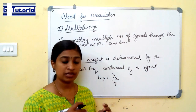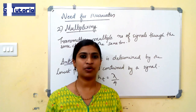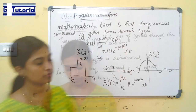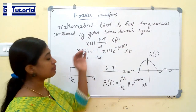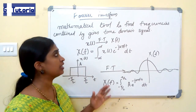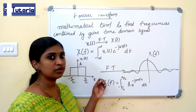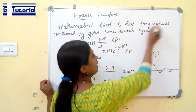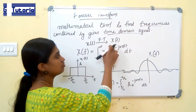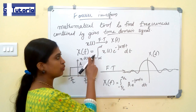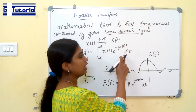Now let us see some properties of the Fourier transform and how it is useful when studying amplitude modulation. The Fourier transform is a mathematical tool to find the frequencies contained in a given time-domain signal. If x(t) is a time-varying signal, then its Fourier transform is x(f), and mathematically x(f) equals the integral from minus infinity to infinity of x(t) multiplied by e raised to minus j2πft dt.